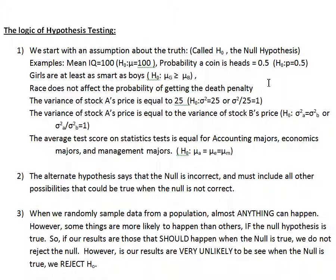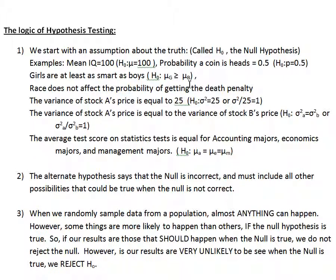We could also test whether a new coin has a probability of landing heads up of 0.5. The null hypothesis would be: P equals 0.5. Some coins might not be 0.5 depending on how they're weighted. We could also have a hypothesis that girls are at least as smart as boys. The null hypothesis would be: the average intelligence for girls is greater than or equal to the average intelligence for boys. That's what we think is true, and now we're going to test it.